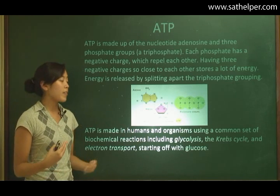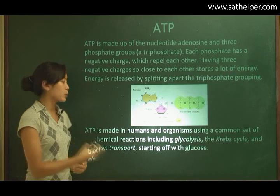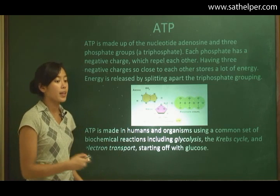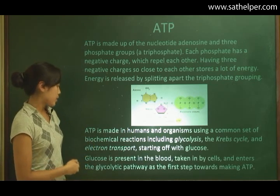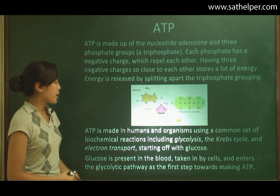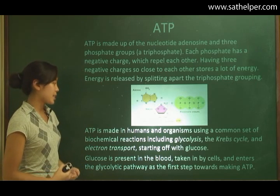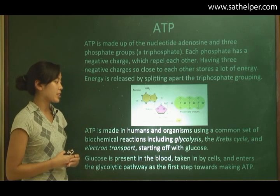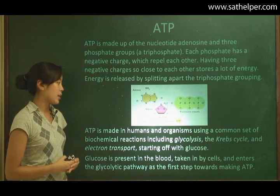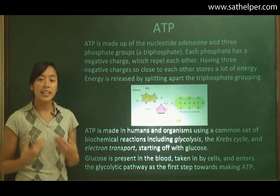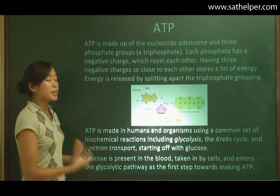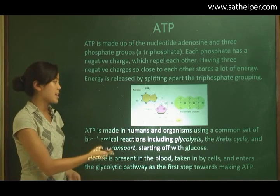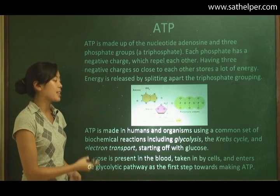We get all of our energy from glucose and turn that into ATP, which we can use later. Glucose is present in the blood, taken in by the cells, and enters the glycolytic pathway as the first step towards making ATP. We eat the glucose, digest it, it's present in our bloodstream, and then it's taken in by the cells.